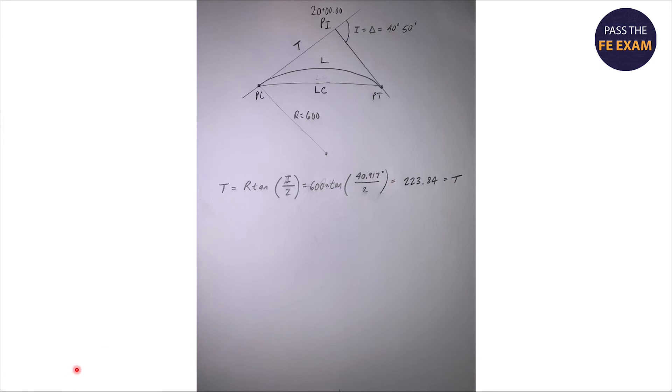First let's solve for the tangent. We have the radius, we can plug in our angle, and we'll come up with a tangent of 223.84. So we now have our tangent.